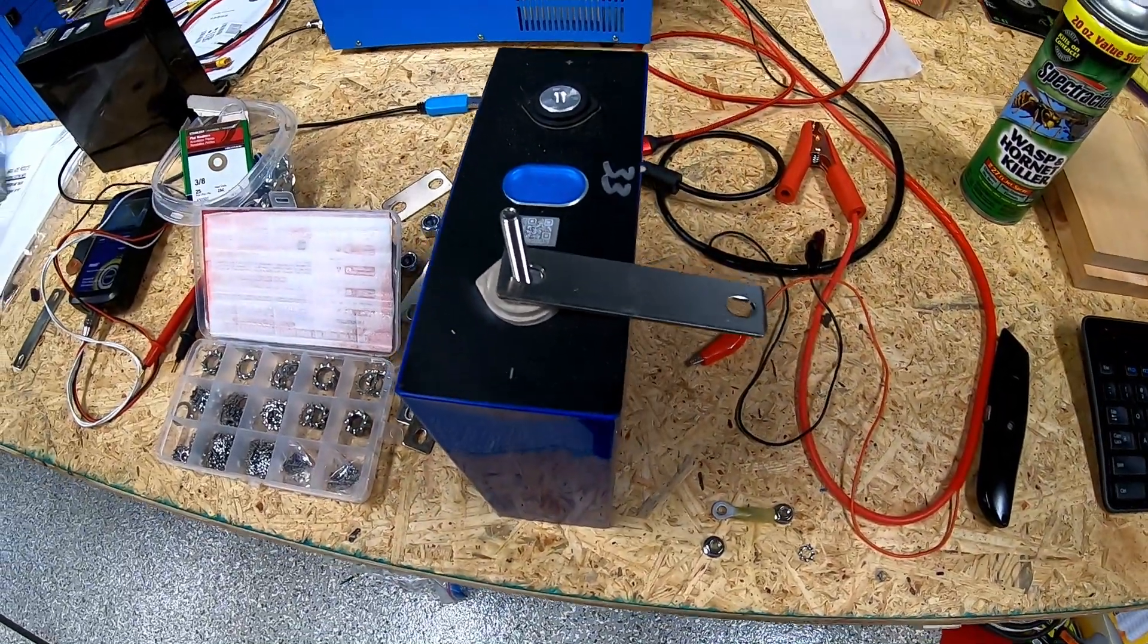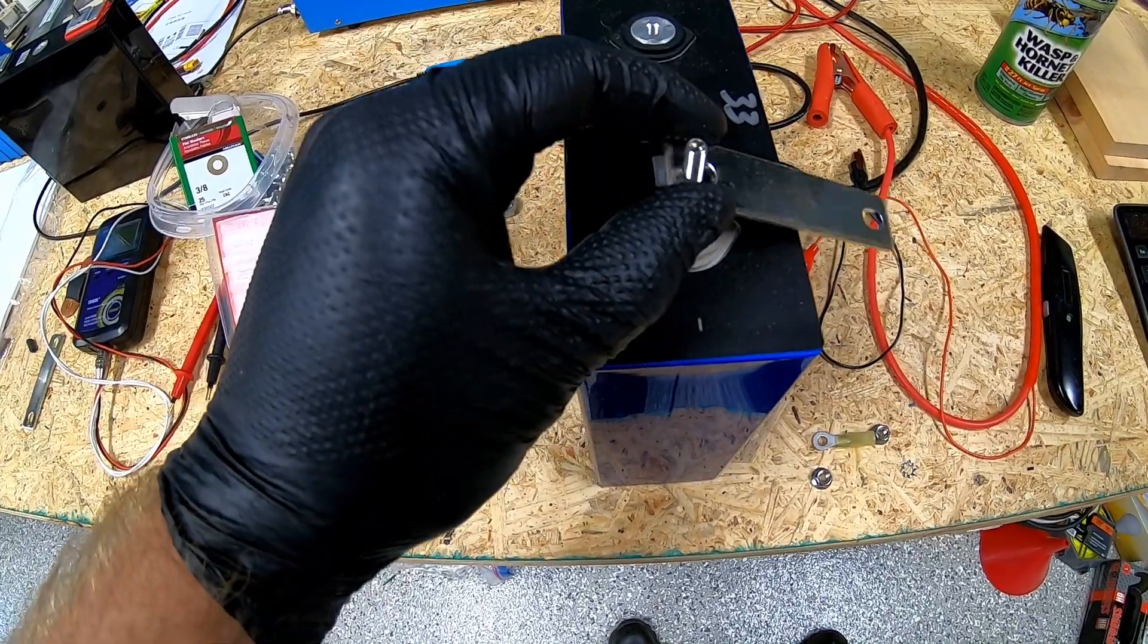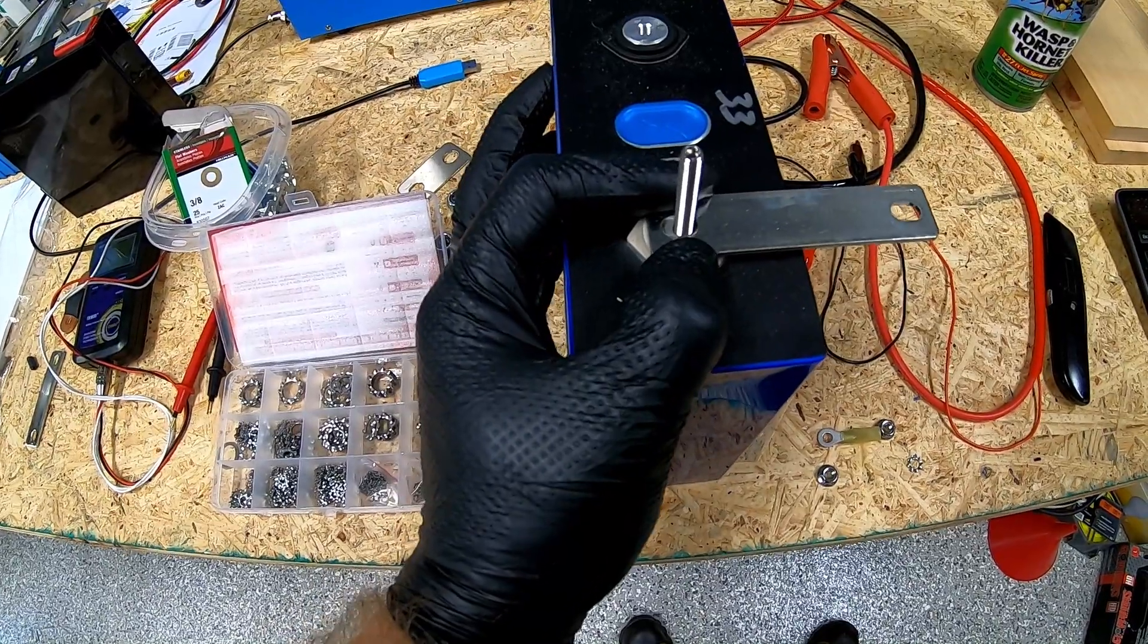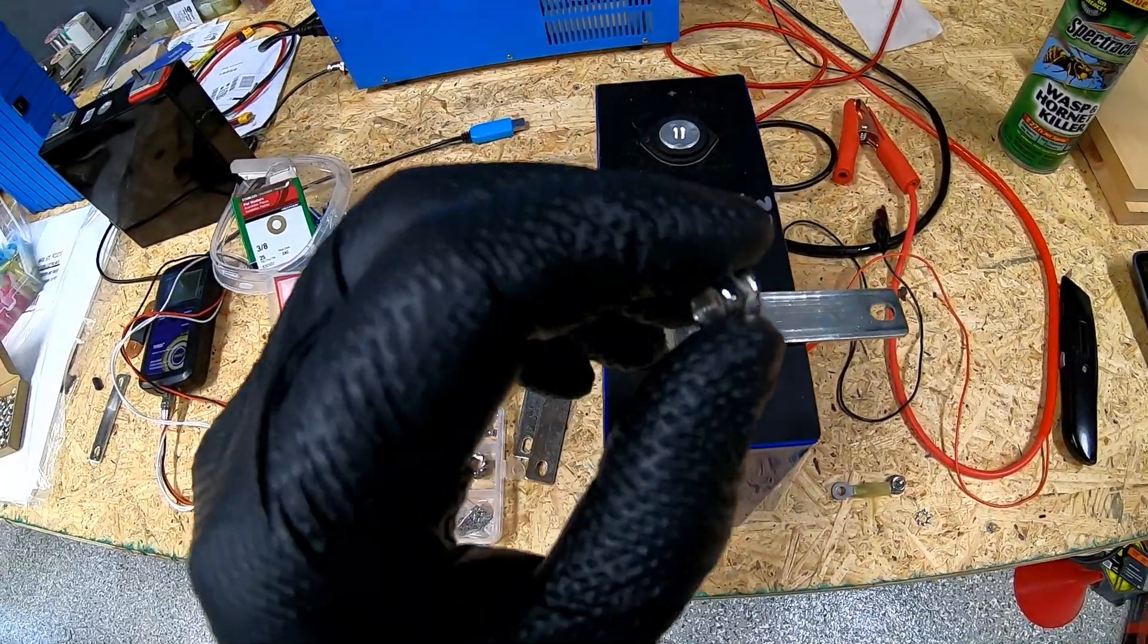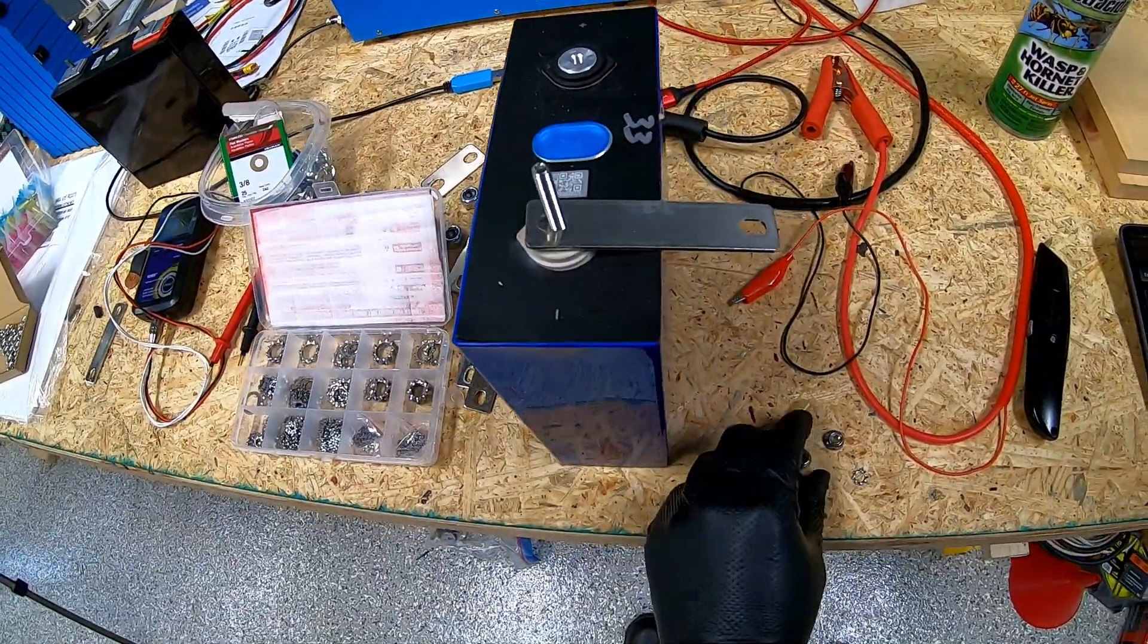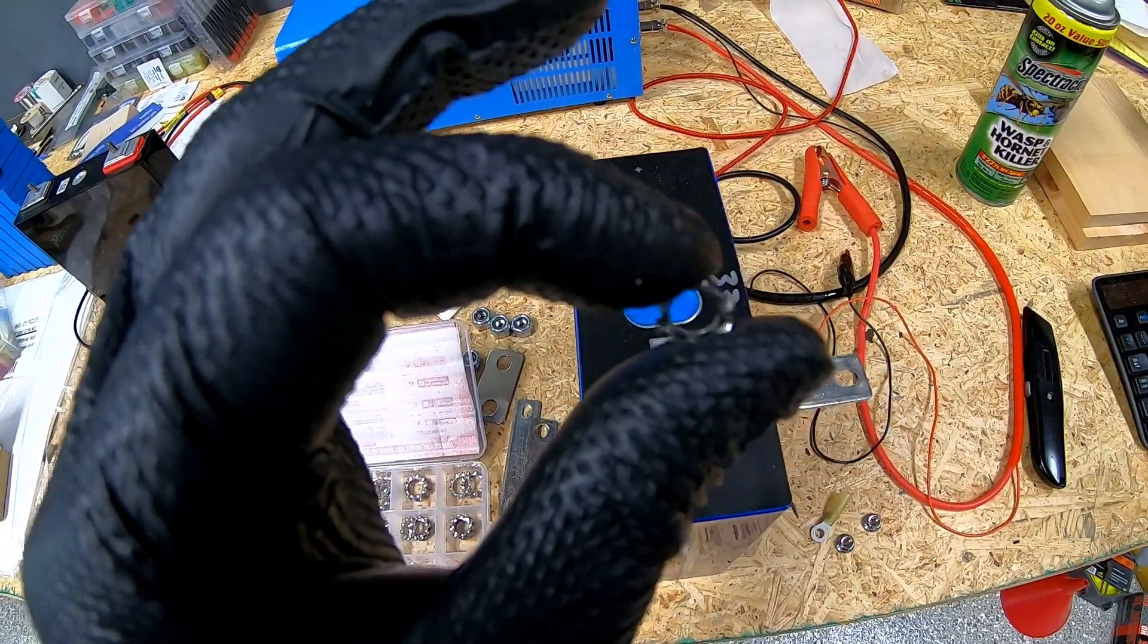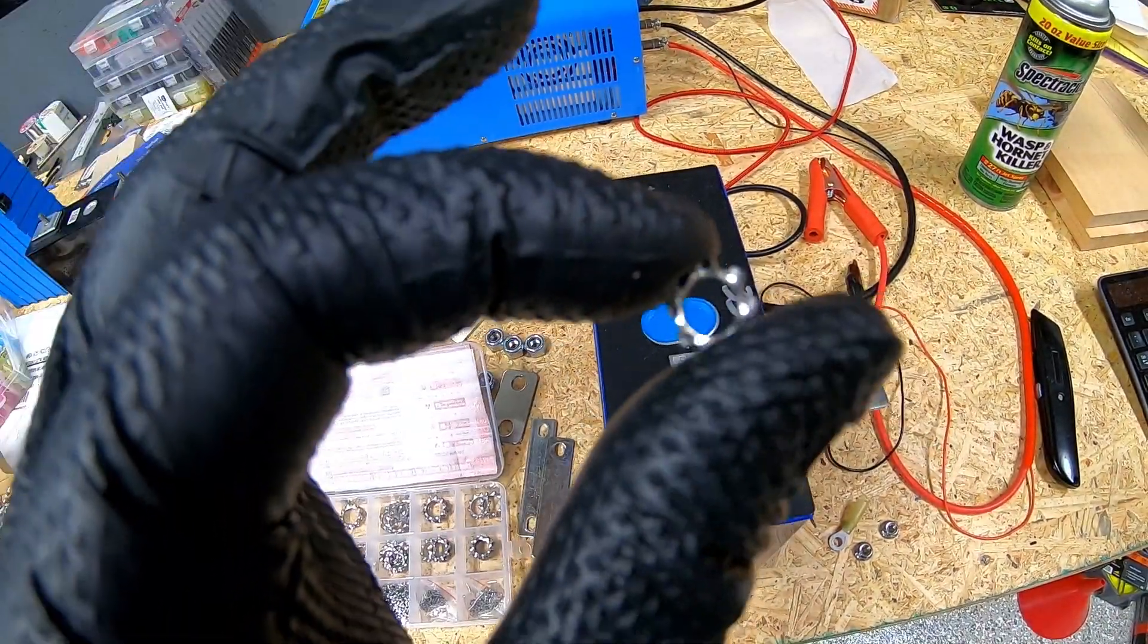What we did to solve the problem is we took it all back down to basically just the stud and the bus bar. Our bus bar still sits flat against our terminal, but instead of just going with a straight serrated flange nut, we went out and got a couple of boxes of these.